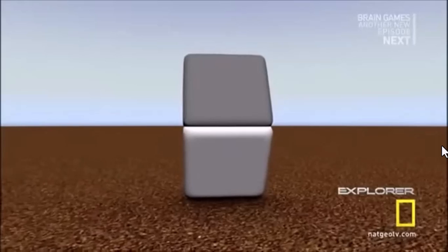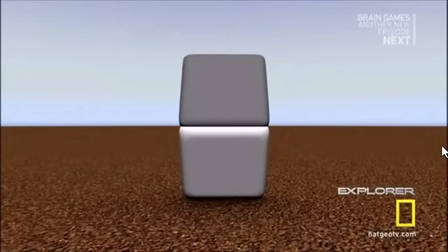Still don't believe these two squares are the same shade of gray? This man, experimental neuroscientist Bo Lotto, is going to show you why your brain is constantly being fooled by what it sees.